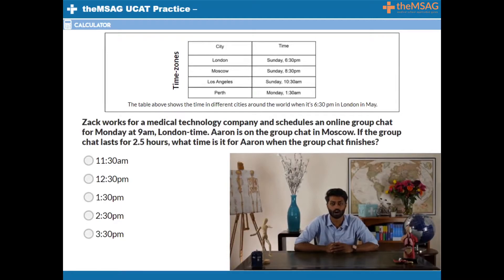So, what exactly are we talking about? In your practice questions, you may have seen a table such as the one on screen. Question 1: Zach works for a medical technology company and schedules an online group chat for Monday at 9am London time. Aaron is on the group chat in Moscow. If the group chat lasts for 2.5 hours, what time is it for Aaron when the group chat finishes?